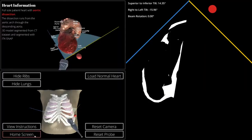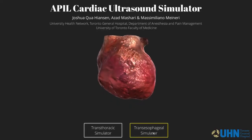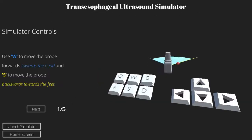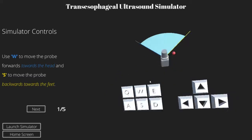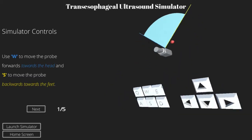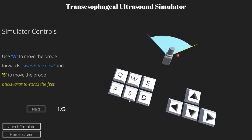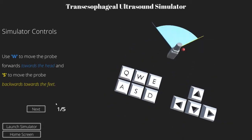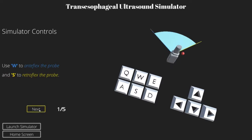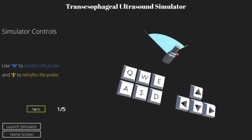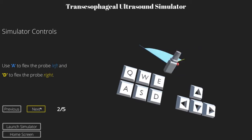Now if we go back to the home screen, we can switch to our transesophageal simulator. It's the same deal. Instead of a TTE probe, we get the head of a TEE probe. The instructions work the exact same way. W and S to anti-flex and retroflex the probe's head, respectively. A and D to flex the probe left and right, respectively.